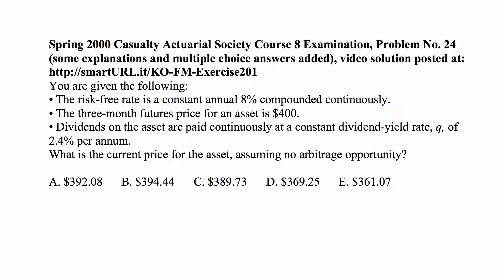Here's a problem for Exam MFE. You are given the following: the risk-free rate is a constant annual eight percent compounded continuously. The three-month futures price for an asset is four hundred dollars. Dividends on the asset are paid continuously at a constant dividend yield rate Q of 2.4 percent per annum. What is the current price for the asset, assuming no arbitrage opportunity?